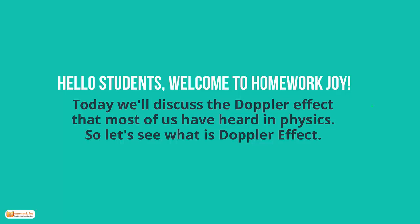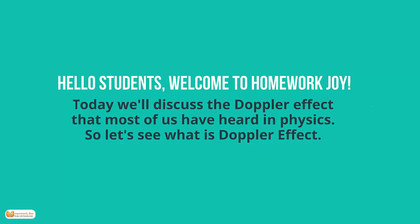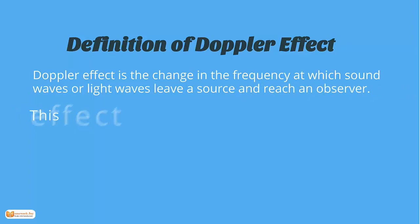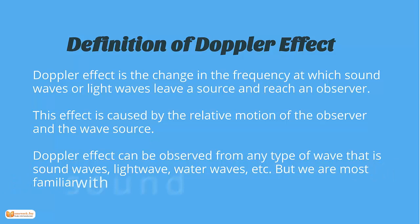The Doppler effect is the change in the frequency at which sound waves or light waves leave a source and reach an observer. This effect is caused by the relative motion of the observer and the wave source. The Doppler effect can be observed from any type of wave — that is sound waves,